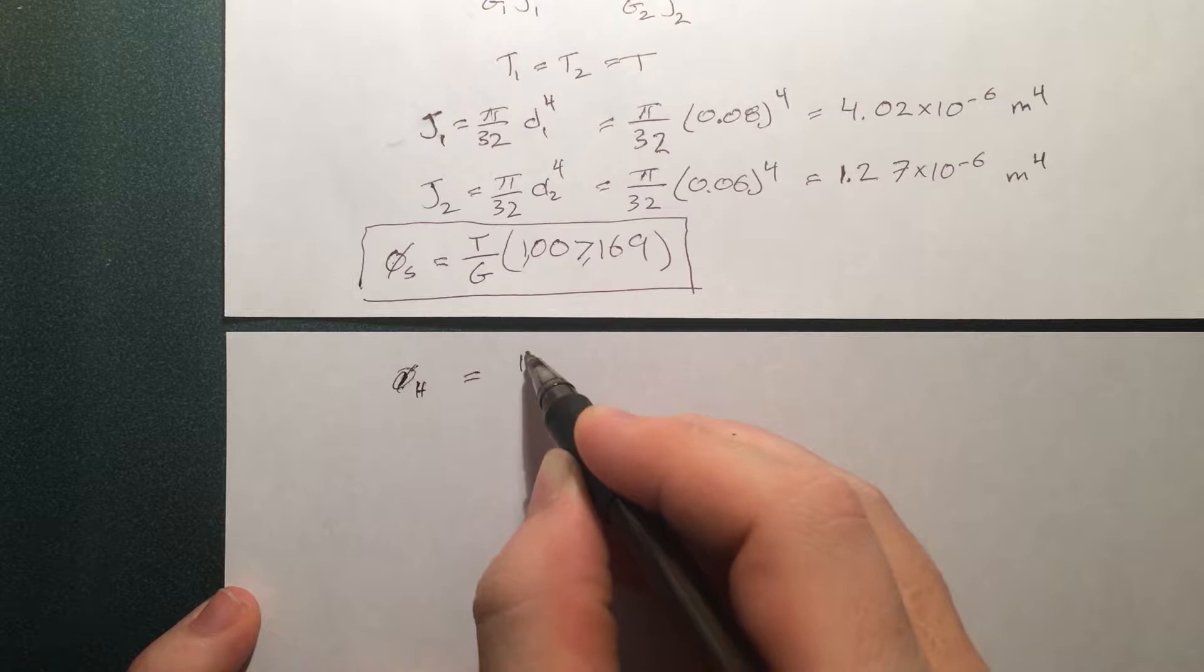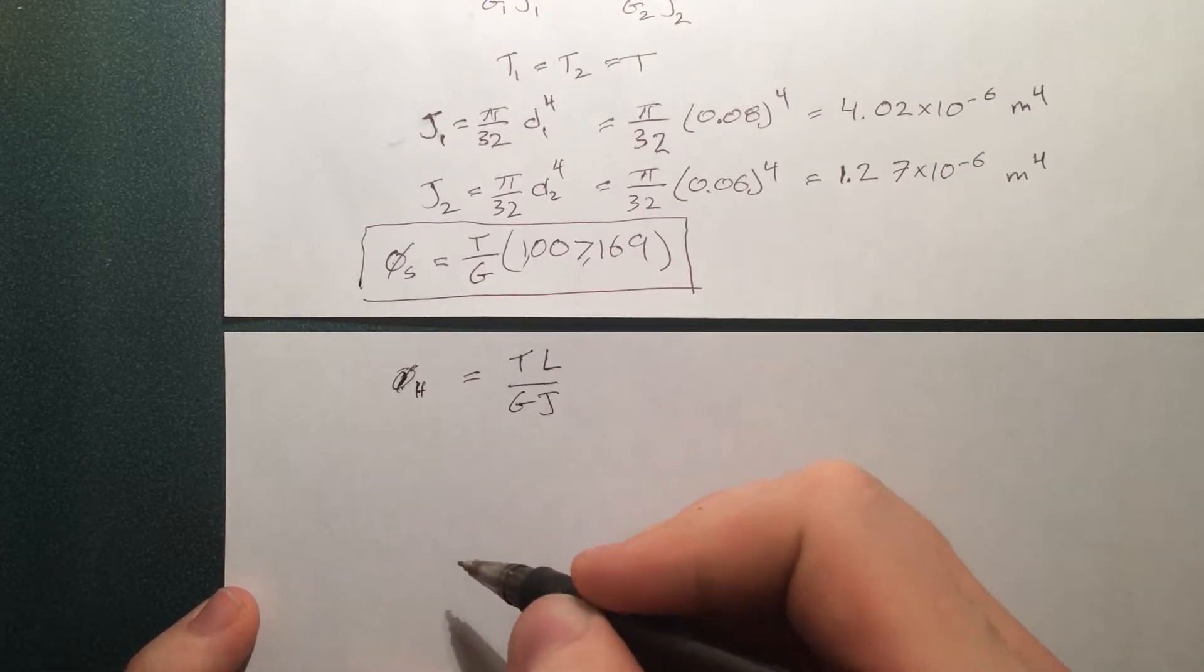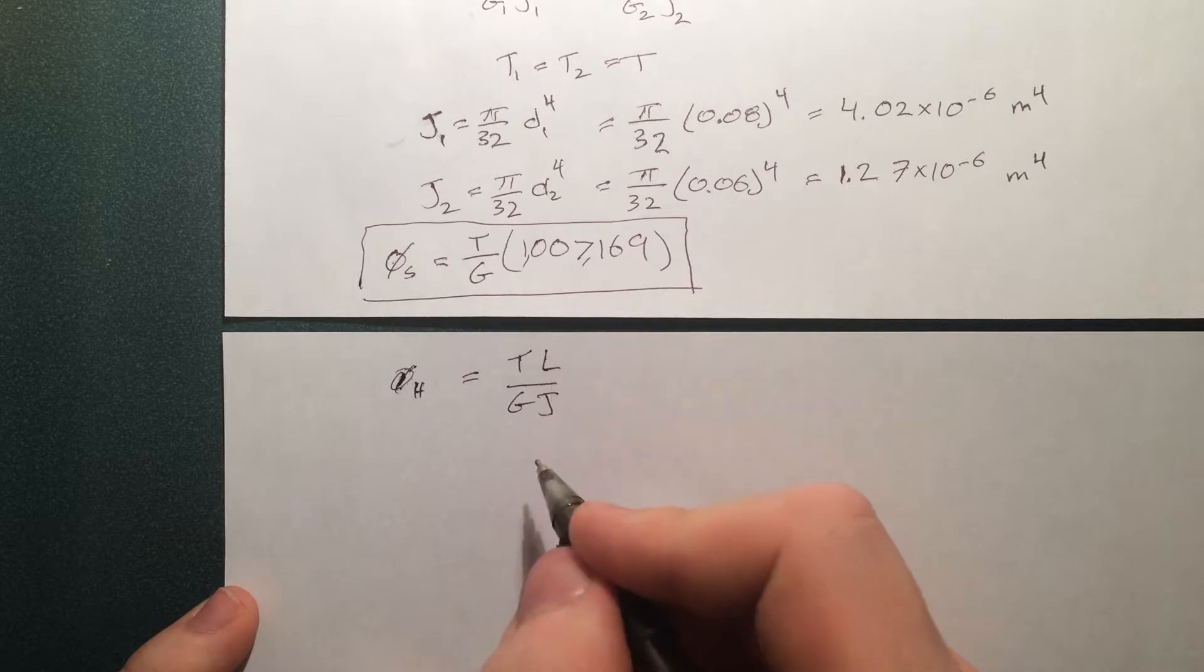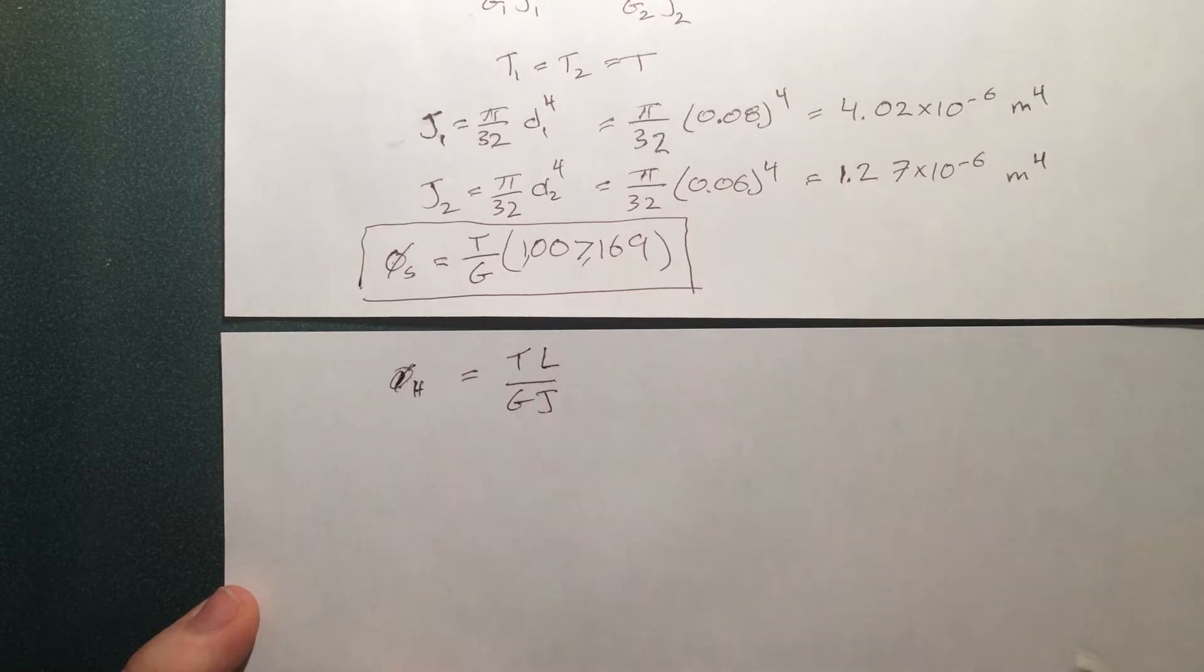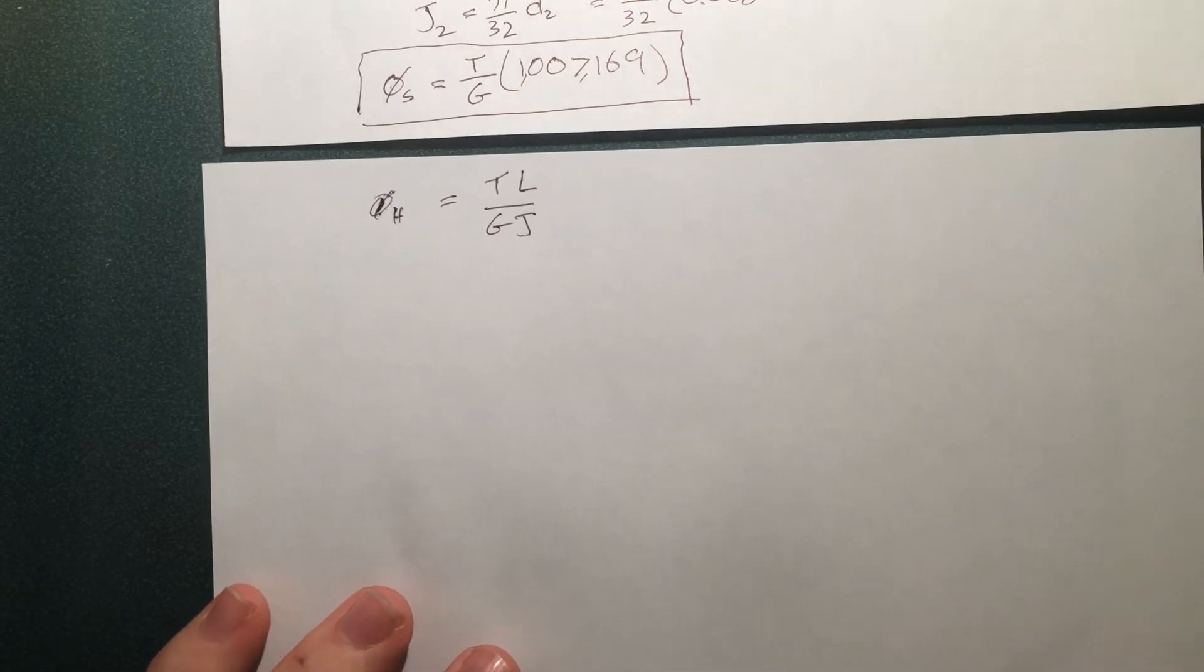And this is just made of one section so it's just going to be T L over G J of all the hollow pieces I've already said T is there G is there this is all the same as these pieces the length that's 2.1 because it's the full thing now J this is the only tricky piece of this bit of a calculation.